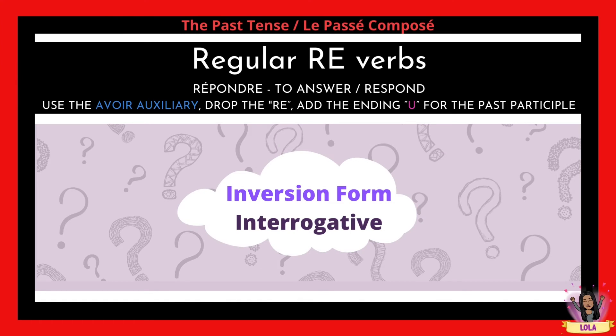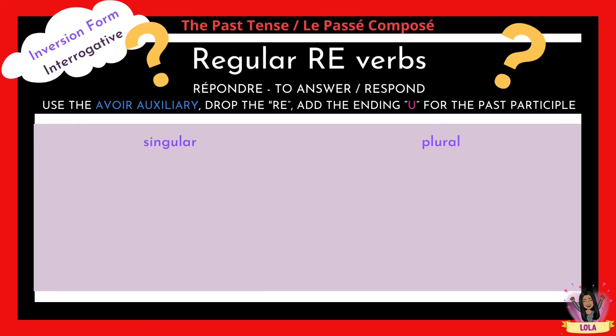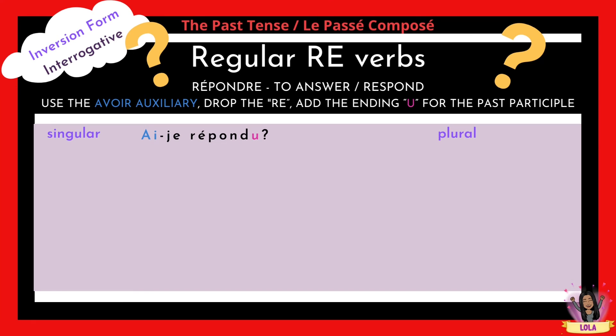Moving on to the inversion form — the interrogative. You can see the question marks because you can now create a question using those three parts. For the singular: we know j'ai répondu means I answered. We switch the subject and the auxiliary — that's what the arrow indicates. So it becomes ai-je répondu, which means: did I answer?